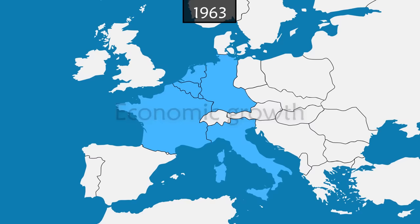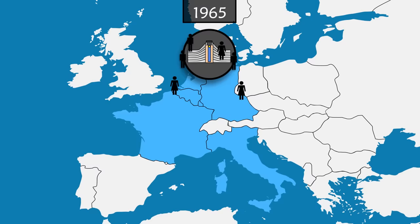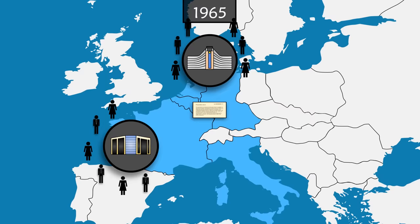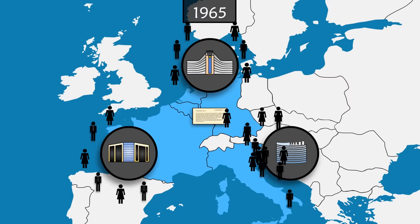The institutions of the three communities are merged to enable more efficient functioning. There is now a single Commission composed of commissioners chosen by the heads of state, whose role is to propose European laws in the common interest of its members. There is the Council, made up of ministers of the member states, whose role it is to approve, modify or reject the proposals of the Commission. There is the Parliament, representing the people of Europe, which also gives its opinion on Commission proposals, and whose power would increase over forthcoming treaties.